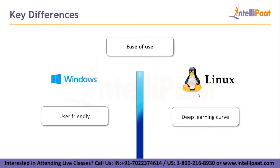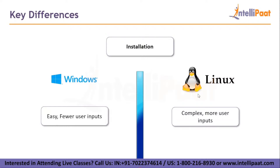Regarding ease of use: Windows was made to be user friendly, with an excellent graphical user interface that can be understood by both technical and non-technical users. Linux takes a while to understand — you need to make yourself familiar with Unix commands just to start using it, and it has a deep learning curve that takes a long time to master. Regarding installation: Windows installation is easy and requires fewer user inputs. Linux installation can be very complicated as it requires a lot of user input. The only downside of Windows installation is that it takes a long time.